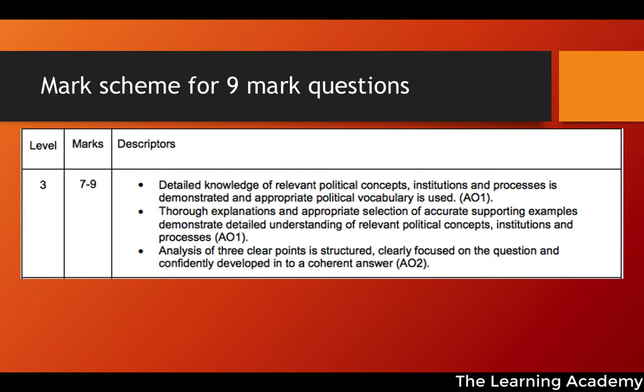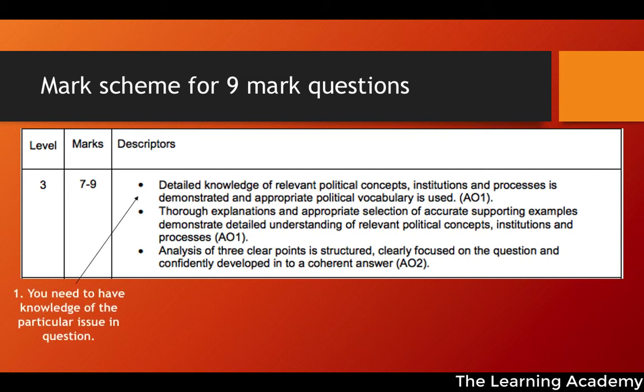So this is the mark scheme — level three for the nine-mark questions. This gives you anywhere between seven and nine out of nine. We're going to focus only on level three because we're trying to get top marks. It identifies three different points: two are AO1-related and one is AO2-related. The first is that detailed knowledge of relevant political concepts, institutions, and processes is demonstrated, and appropriate political vocabulary is used.